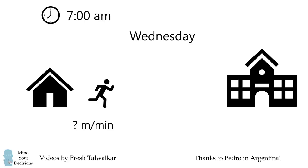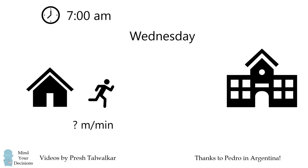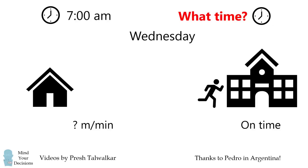Then, on Wednesday, Pedro walks at some rate, and he reaches school exactly on time. There are two parts to this question. First, what time did Pedro reach the school on Wednesday? And second, what speed did he walk on Wednesday?